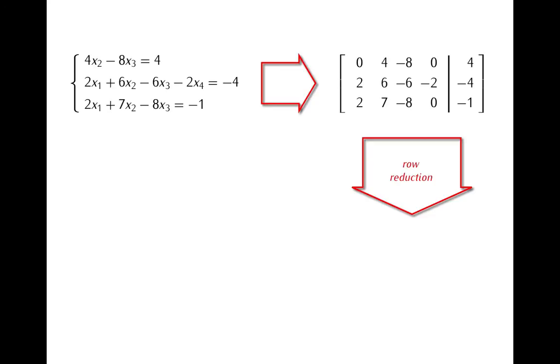But, luckily, the augmented matrix we have here is the same matrix that I used in the last segment to explain how row reduction works. So if you want to have a look at how to reduce this matrix step by step, you can go back to the last segment. But here I will just use the fact that the result of this row reduction is a matrix which looks like this.